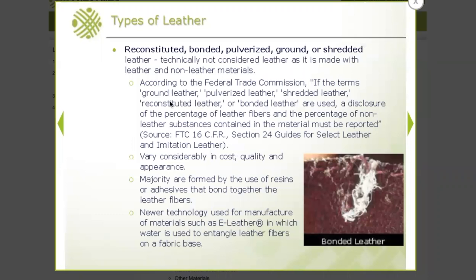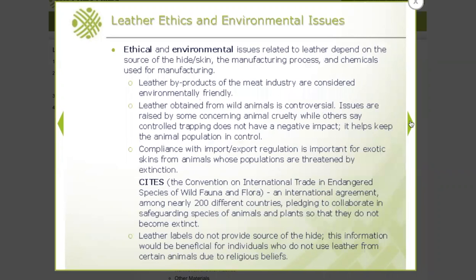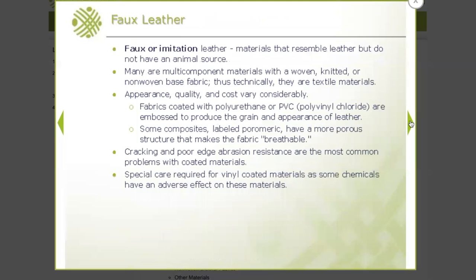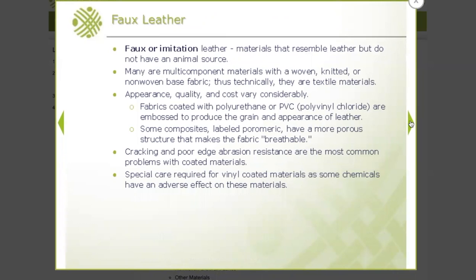There is also leather that is reconstituted, bonded, or shredded — this is not necessarily considered leather because it's made with some leather or non-leather materials mixed together, almost like a recycled material. With leather, there are a lot of ethical and environmental issues — animal rights activists are against using real leather. There's a trend to use other materials that look like leather, called vegan leather or faux leather, made out of synthetic materials like vinyl or other polymeric materials.